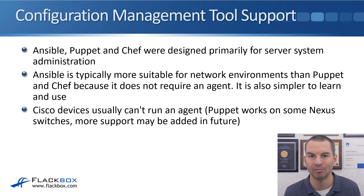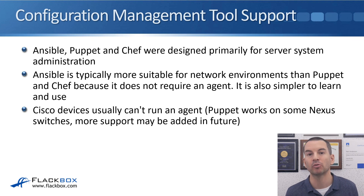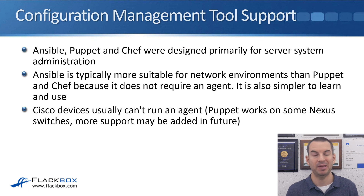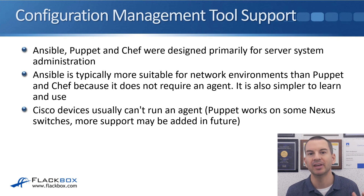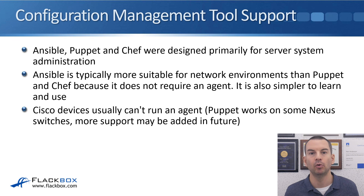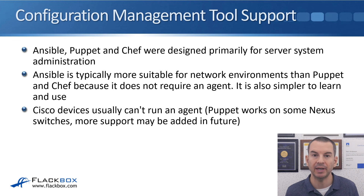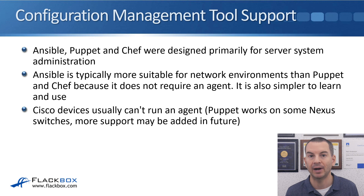Cisco devices usually can't even run an agent. Puppet does work on some Nexus switches and more support may be added in future, but right now there's limited support for Puppet on Cisco devices and basically no support for Chef. That might change as the industry moves forward — Cisco might add additional support for Puppet and Chef. But with Ansible, because it does not require an agent on the devices, Ansible works just fine straight out of the box with all network devices. In the next lecture, I'll show you a lab demo of Ansible.